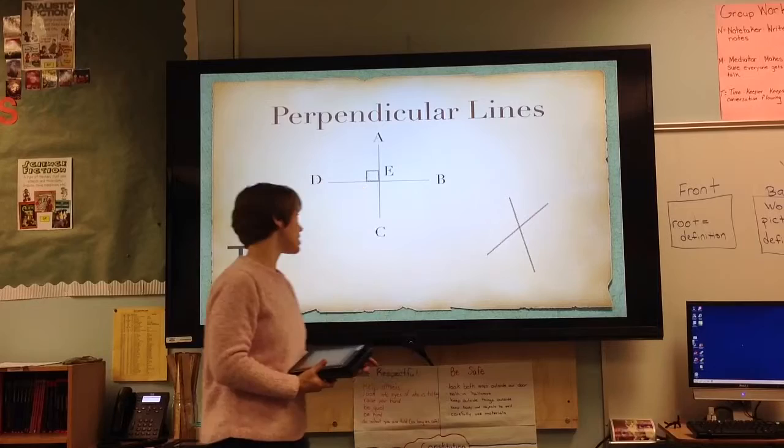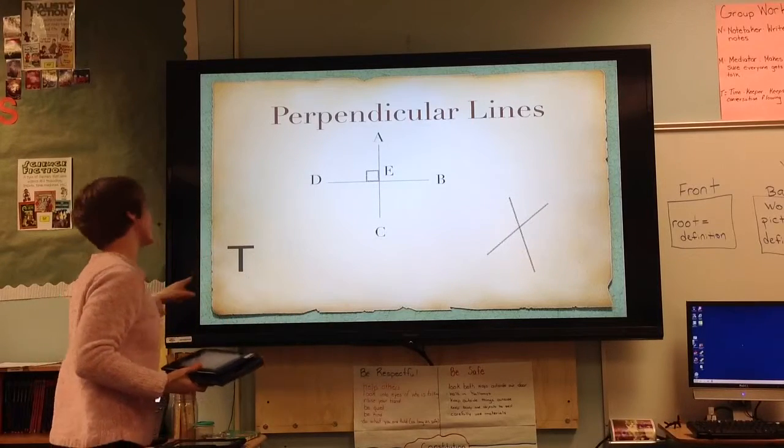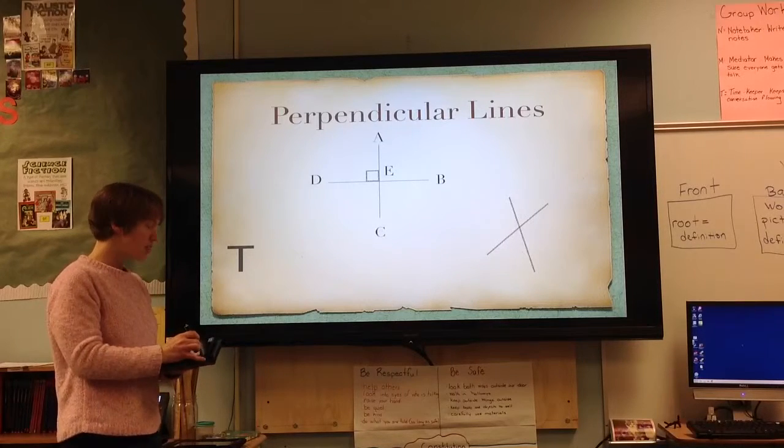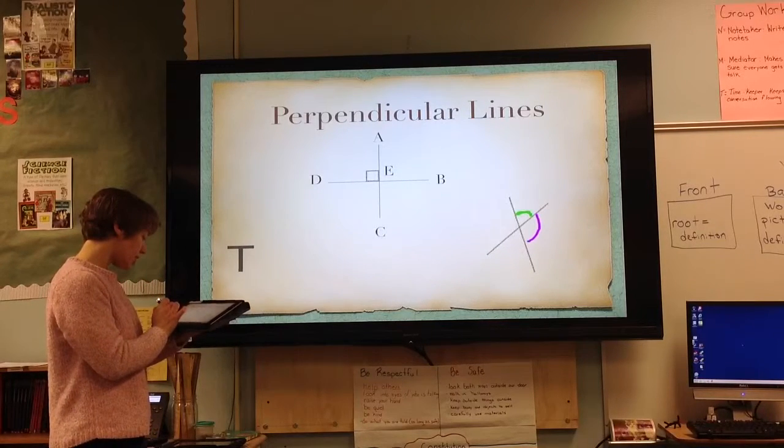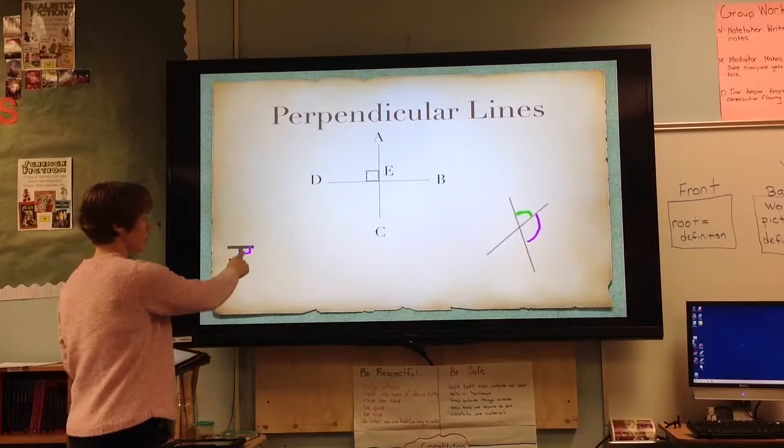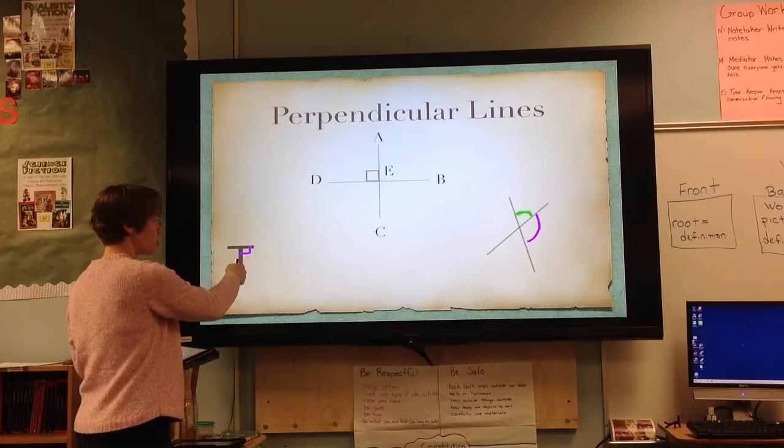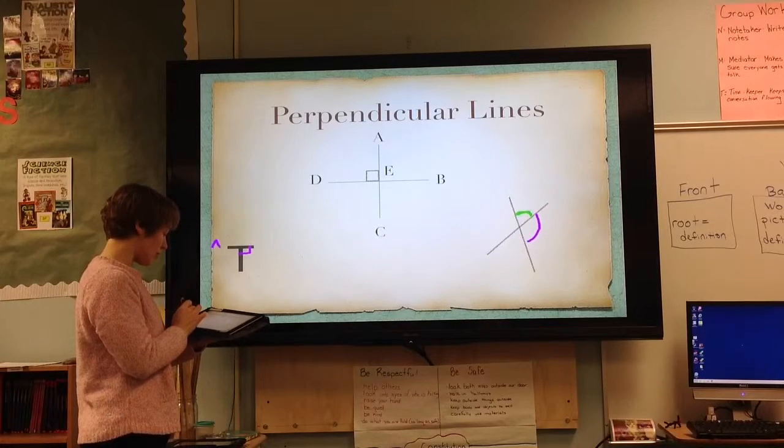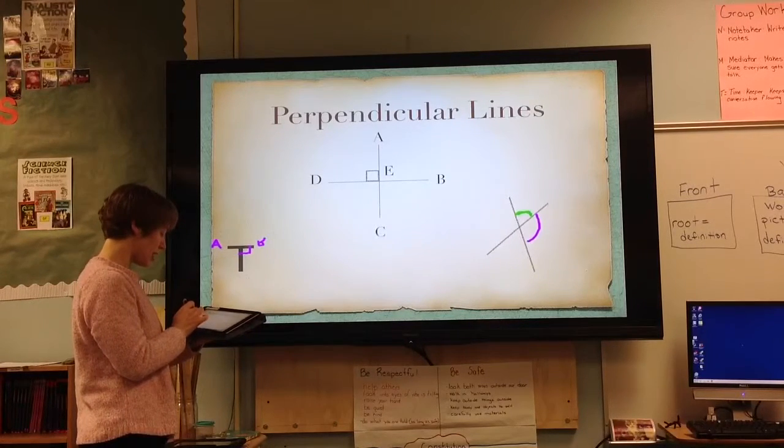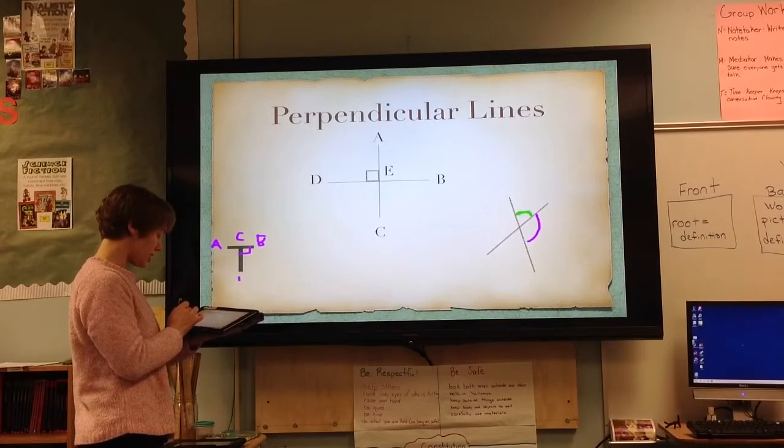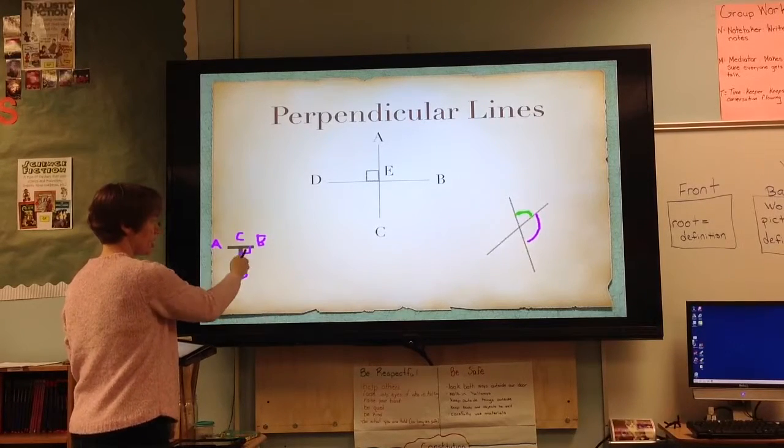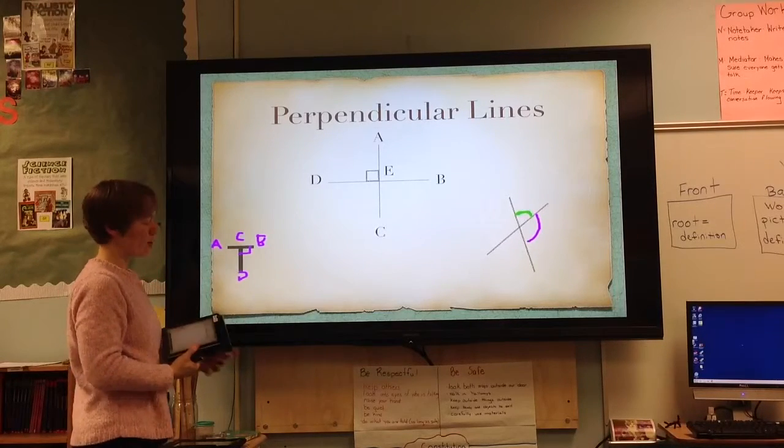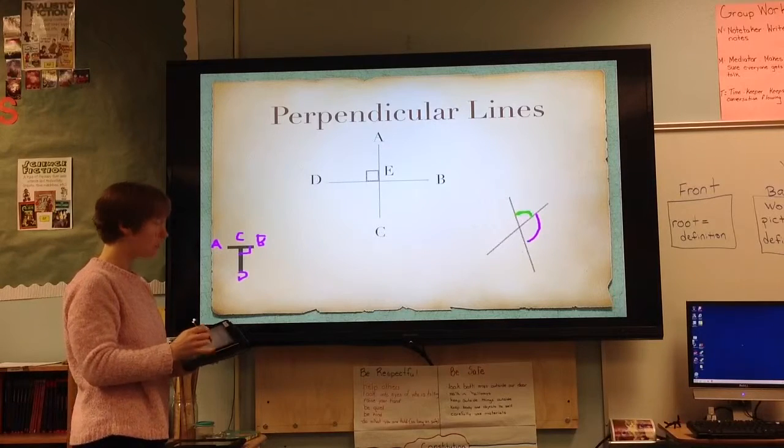So if we look at this letter T right here, we could ask ourselves, does this have perpendicular lines? And the answer is yes, because this is a right angle. Therefore, these two line segments are perpendicular lines. I could label them line segment AB and line segment CD. They intersect. Intersect means to cross or touch at a right angle. Therefore, perpendicular.